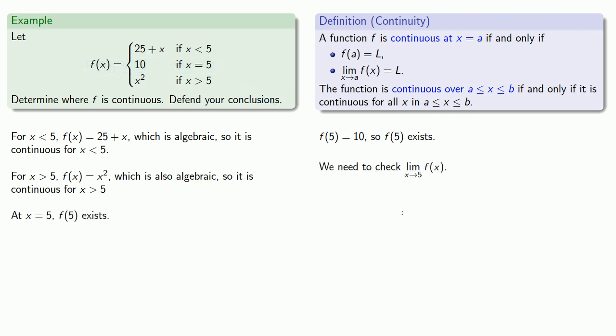We also need to check the limit as x approaches 5 of f of x. Since the rule changes at x equals 5, we'll approach from below and from above. As x approaches 5 from below, f of x is the function 25 plus x. Since this is algebraic, we'll just let x be 5 and we'll get a limit value of 30. As we approach 5 from above, our function is x squared. So our limit as x approaches 5 from above is going to be the limit of x squared, which will be 25.